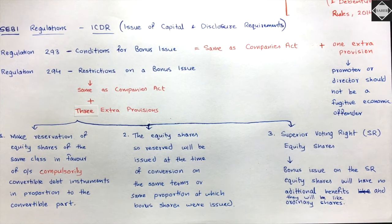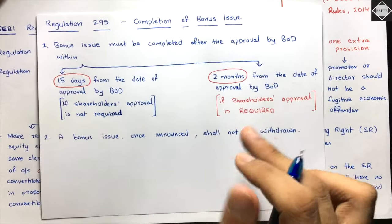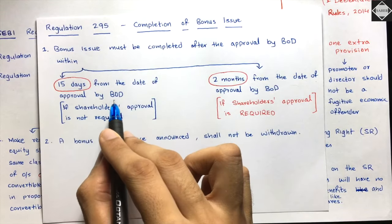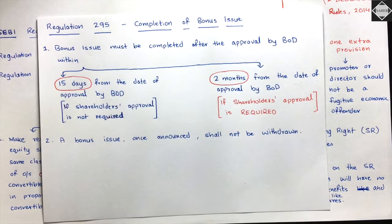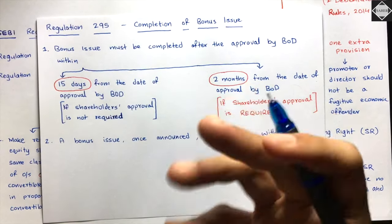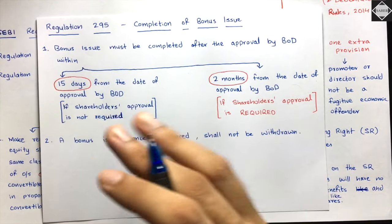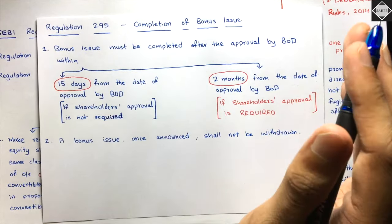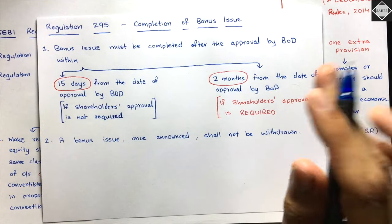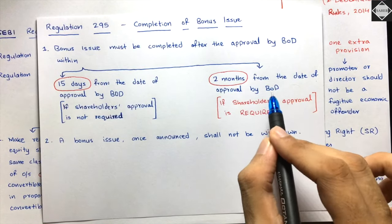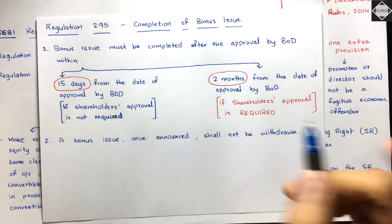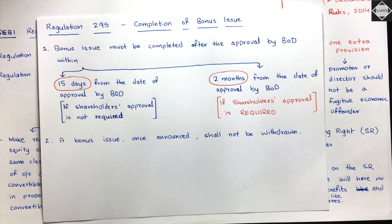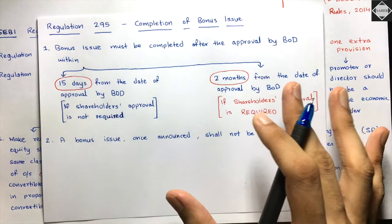Regulation 295 covers completion of bonus issue. If shareholders' approval is not required, the bonus issue must be completed within 15 days from the date of board approval. If shareholders' approval is required, the time limit is 2 months from the date of board approval. Also, once a bonus issue is announced, it shall not be withdrawn.